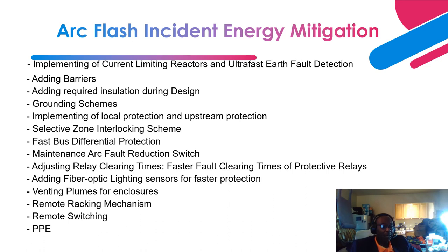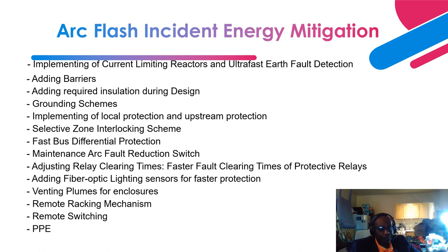Next is a remote racking mechanism, which allows the maintenance worker to be far away from the switchgear during racking operations. Next is remote switching — a SCADA system where wiring goes through an RTU to a SCADA or DCS system, allowing you to switch the breaker in and out from a remote location without having a worker in close proximity to the switchgear. Finally, PPE — as a last resort, having the required PPE and following the required working distance.